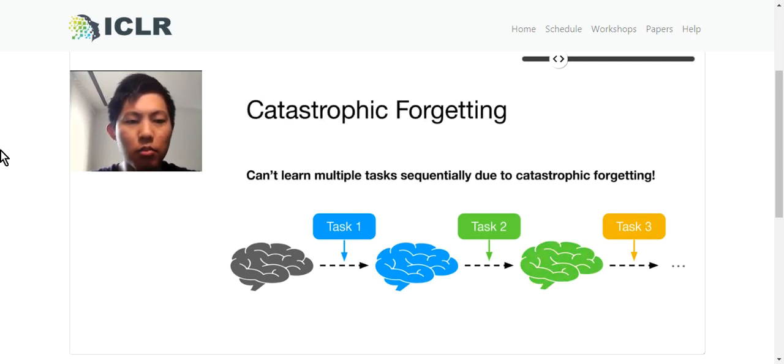However, for most machine learning algorithms, the model can't learn multiple tasks sequentially due to catastrophic forgetting. That is, the model will forget about task 1 after learning on task 2, and forget about task 1 and task 2 after learning on task 3.